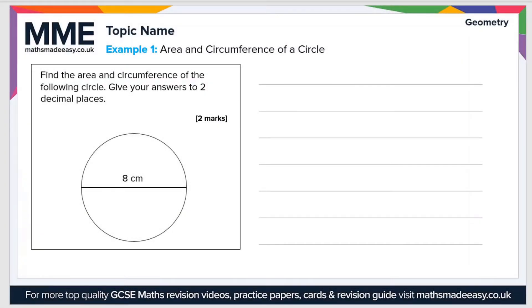So let's have a look at an example now. Find the area and circumference of the following circle. Give your answers to two decimal places. So first of all, let's calculate the area. The formula we need is A equals pi r squared. We don't have r, but we do have the diameter d which is 8 centimeters. So the radius is half the diameter because the radius is from the center to the edge, so radius equals 8 divided by 2 which is 4 centimeters.